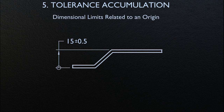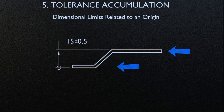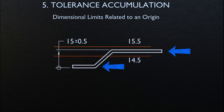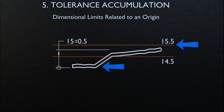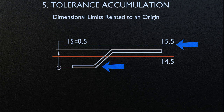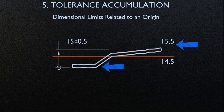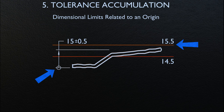Let's take a look at dimensional limits related to an origin. In certain cases, it is necessary to indicate that a dimension between two features shall originate from one of these features and not the other. The shorter surface feature is selected; the high points of that surface define a plane for measurement. Dimensions related to the origin are taken from that plane or axis and define a zone within which the other feature — the longer surface — must lie. Remember that this concept does not establish a datum reference frame. The dimension origin symbol signifies that the dimension originates from the plane established by the shorter surface.